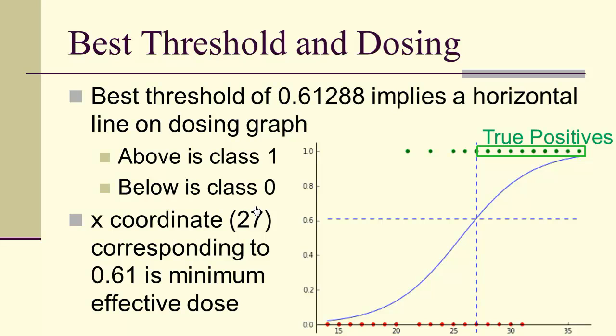And notice that means that the true positives are the ones that are both predicted positive and are actually positive. The true negatives are predicted negative and are actually negative.